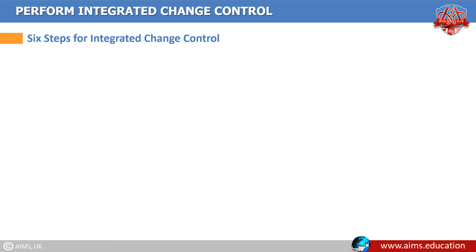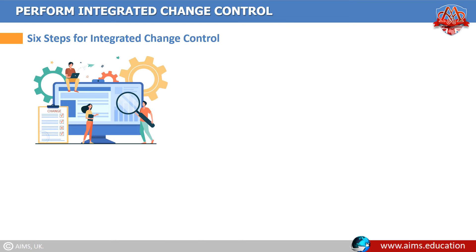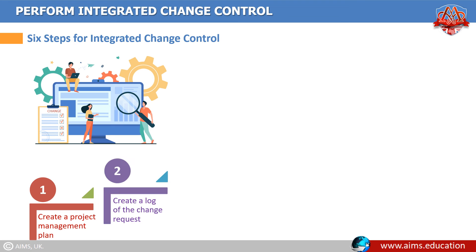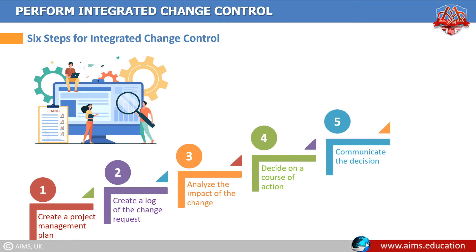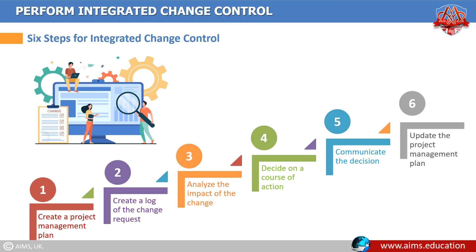Here are six steps to implement an integrated change control process within your organization: number one, create a project management plan; number two, create a log of the change request; number three, analyze the impact of the change; number four, decide on a course of action; number five, communicate the decision; number six, update the project management plan.